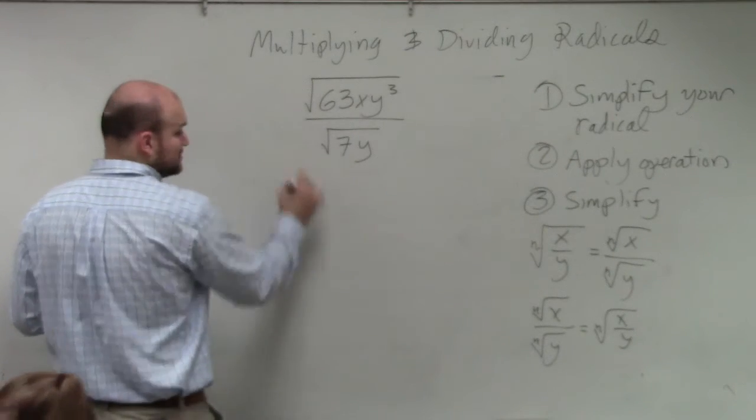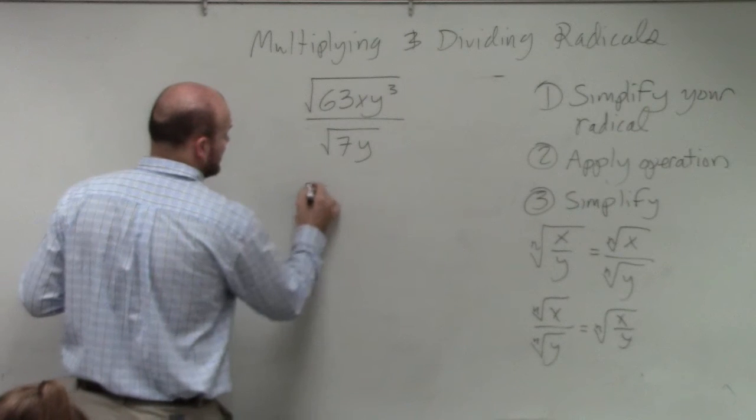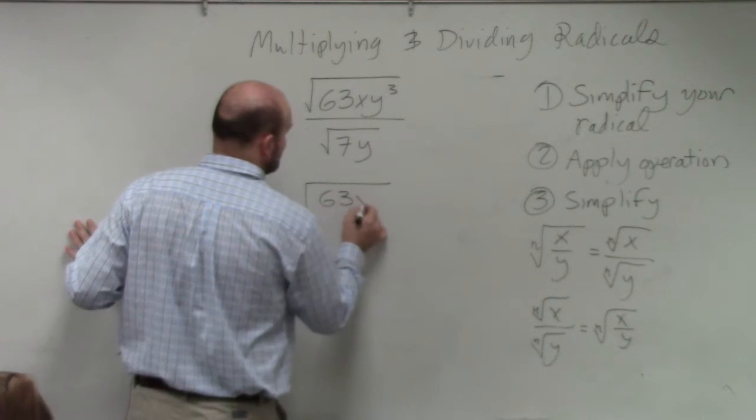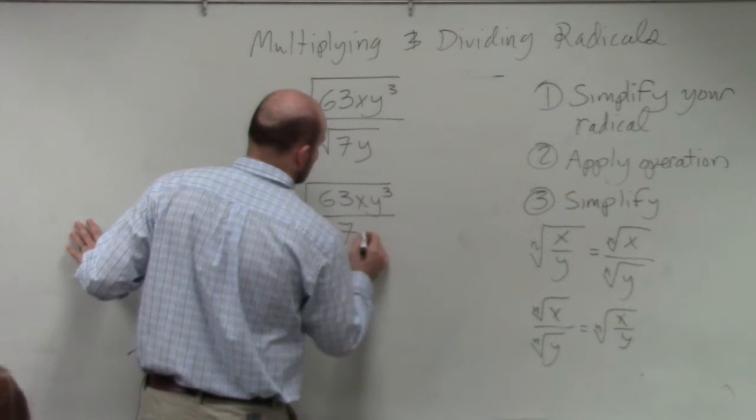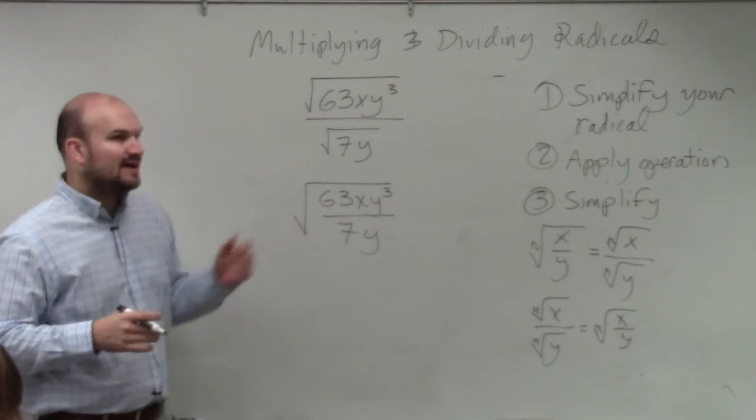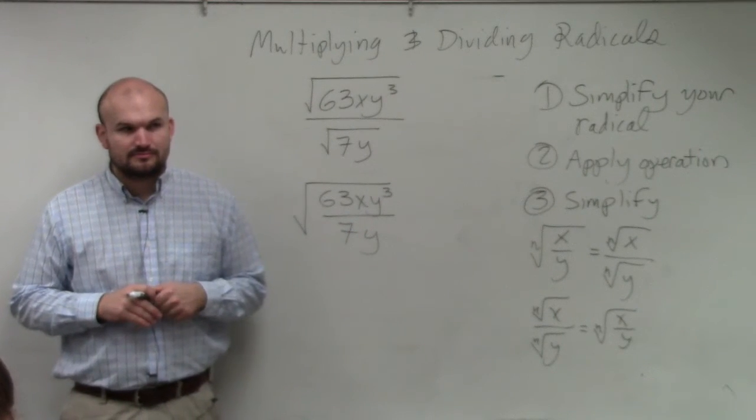So these are square roots, right? So I'm just going to try this. I'm going to say, all right, well, what about if I wrote this as 63xy cubed divided by 7y? Can I simplify this expression further? Yes?